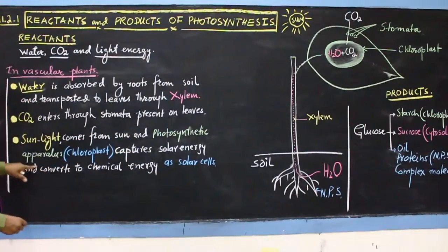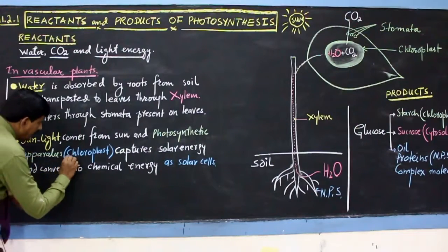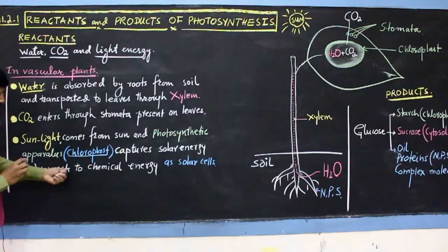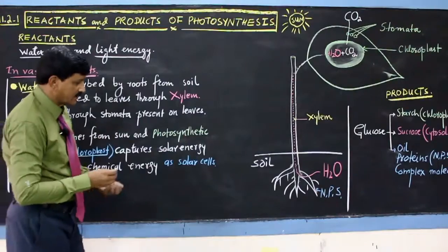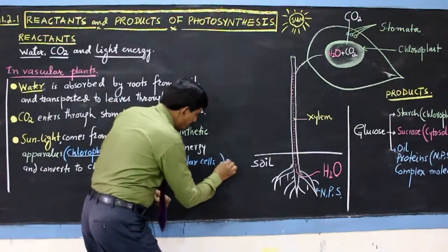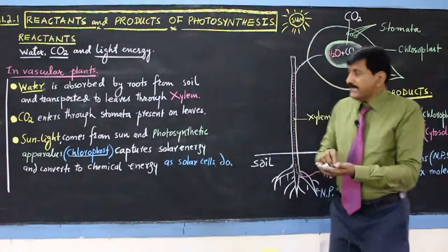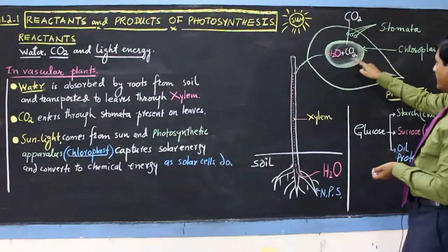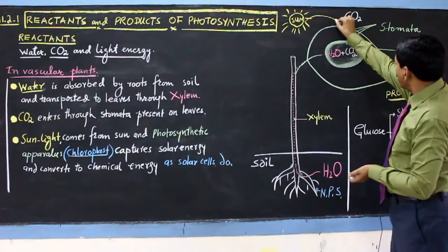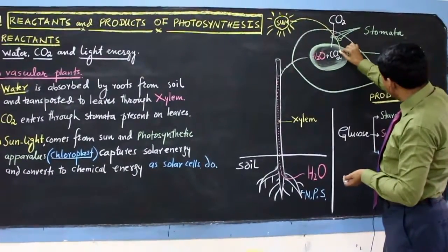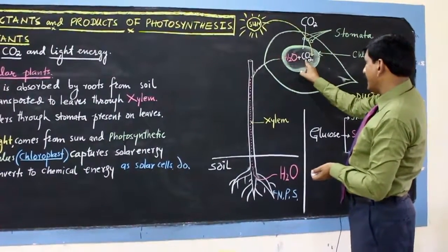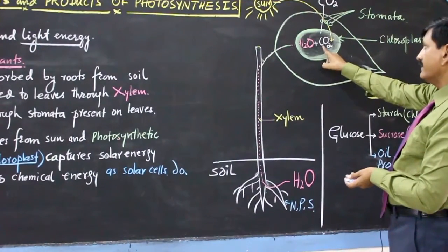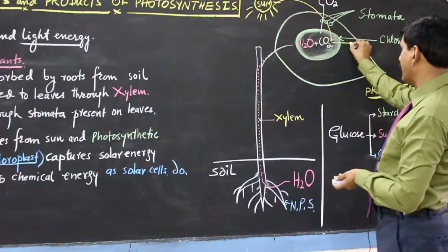The photosynthetic apparatus, means the chloroplast, captures solar energy and converts it to chemical energy, as solar cells do. Sunlight — the chloroplast captures sunlight. Yahan par sunlight aayi, aur then sunlight ki presence mein, chlorophyll ki presence mein, water aur carbon dioxide — the reactants — aur yahan par banega glucose.